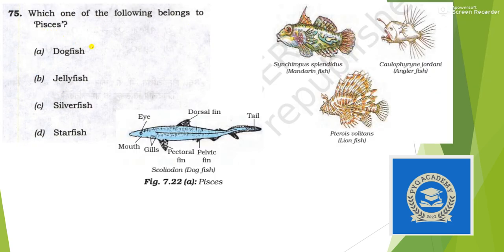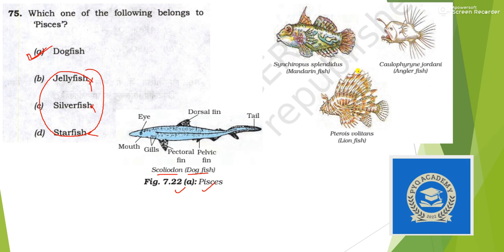Next: which of the following belongs to Pisces? The options are confusing but dogfish — whose scientific name is Scoliodon — belongs to Pisces, the true fish. Jellyfish, silverfish, and starfish are not Pisces. Other Pisces examples include mandarin fish, angelfish, and lionfish. Answer is option A.